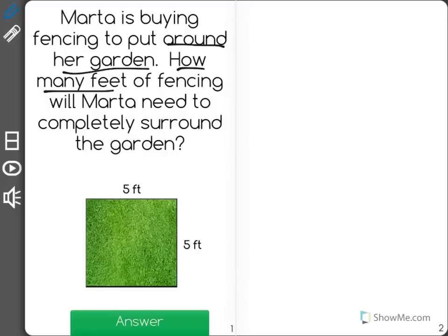First, you can see we only have 5 feet and 5 feet marked. She wants to know how much it would be to surround the entire garden, so we need to fill in the missing lengths.